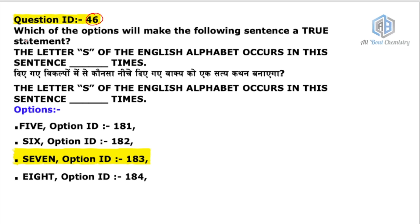The sentence says: 'The letter S of the English alphabet occurs in this sentence ___ times.' Now a lot of you made this mistake — you simply counted how many times the letter S appears. Going through the sentence, you find S appearing: first, second, third, fourth, fifth, and sixth time. So many of you wrote 6 as the correct option and are saying the answer should be option 182.